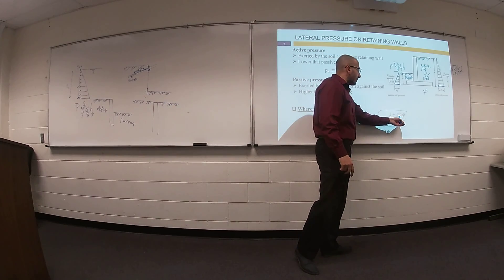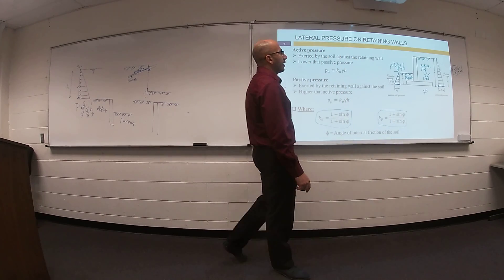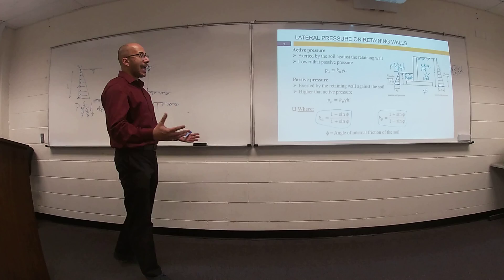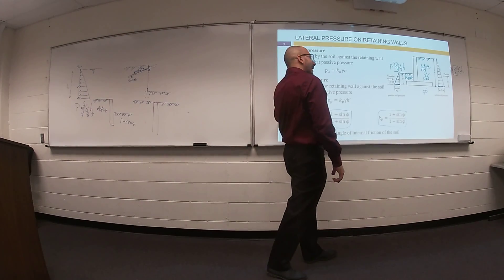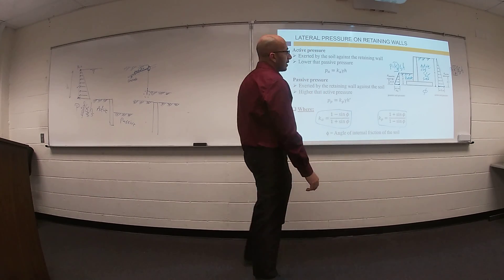K passive equals 1 plus divided by 1 minus. So right now, I can tell you what is the earth's pressure on this side and what is the earth's pressure from the other side.